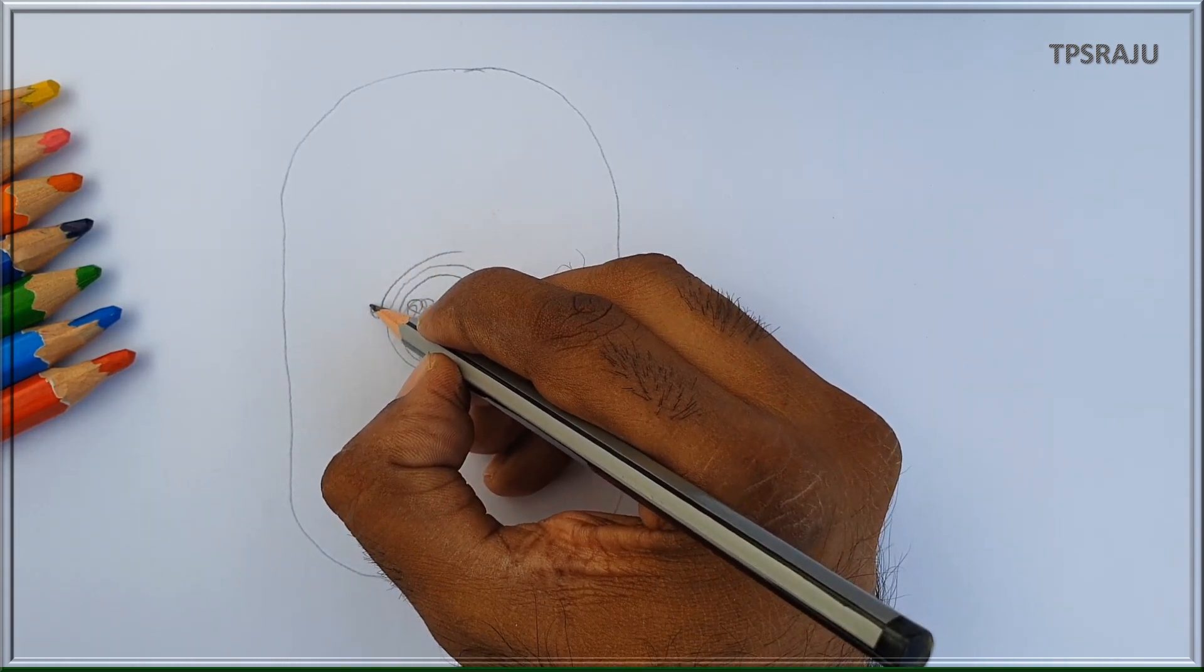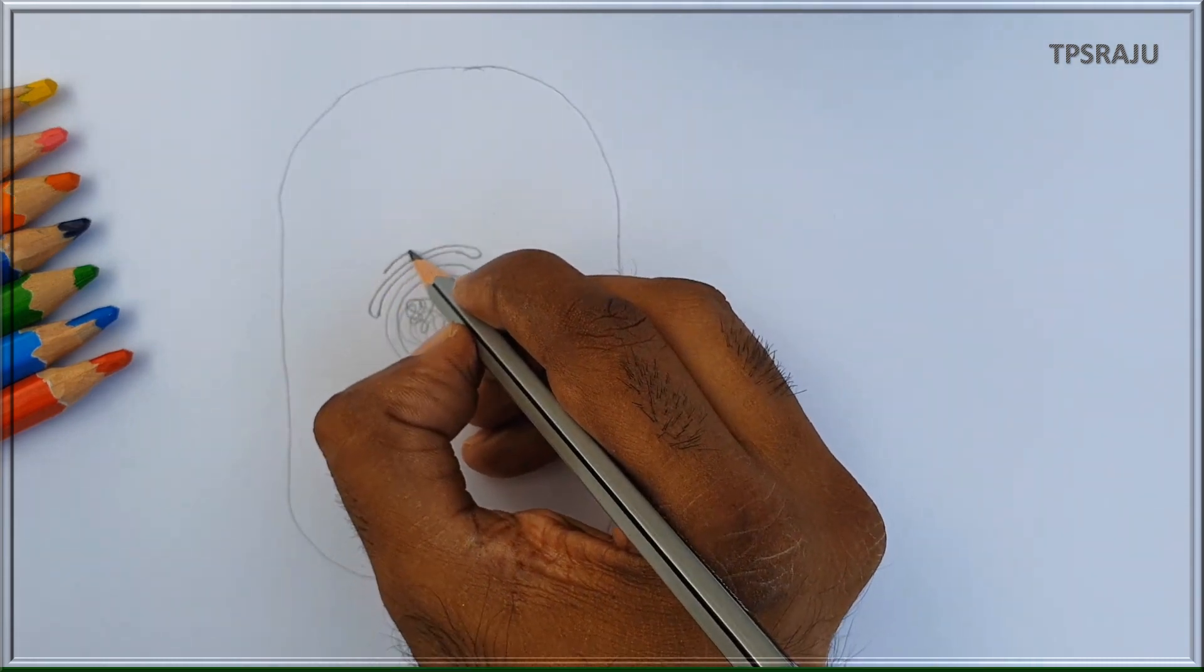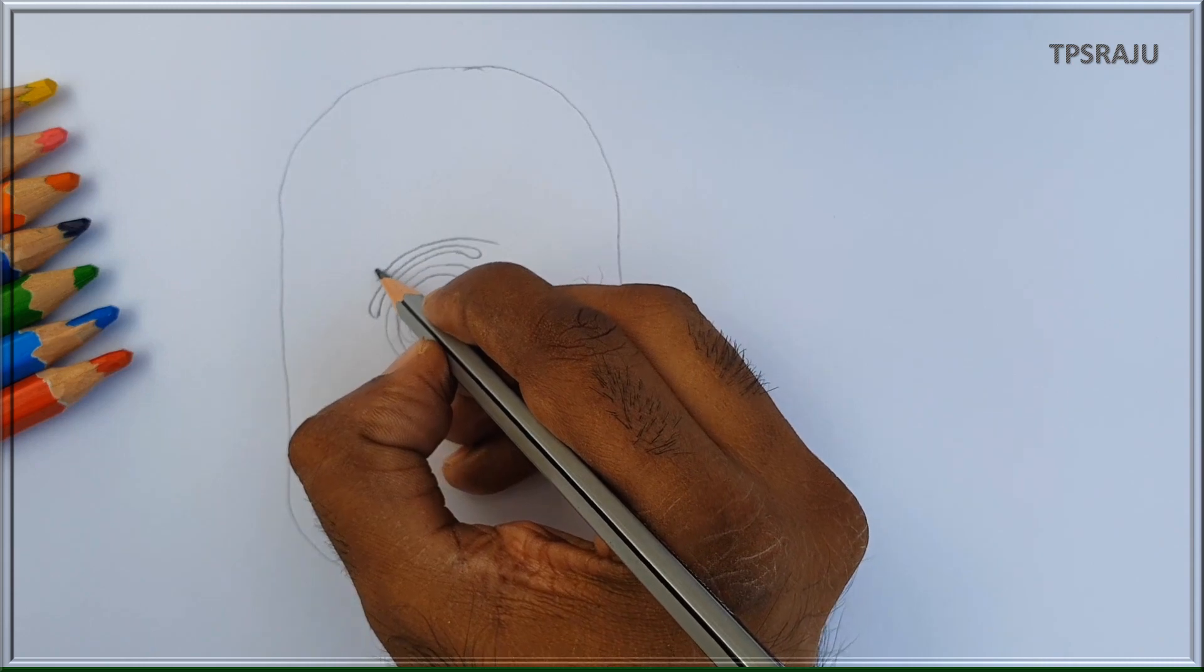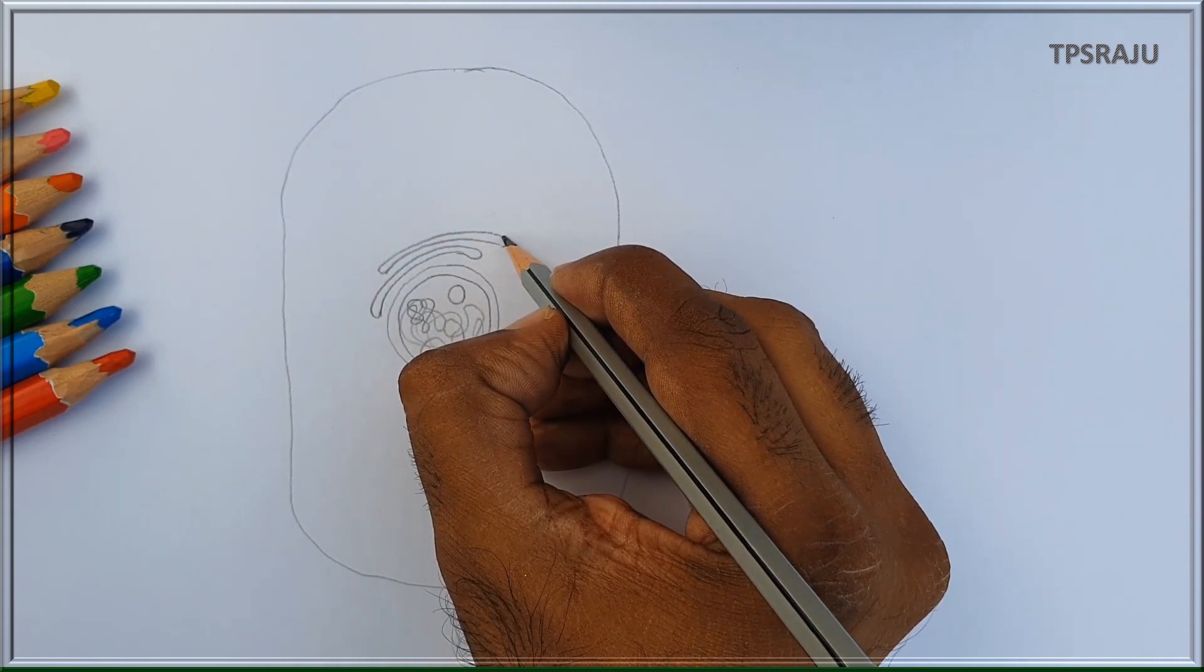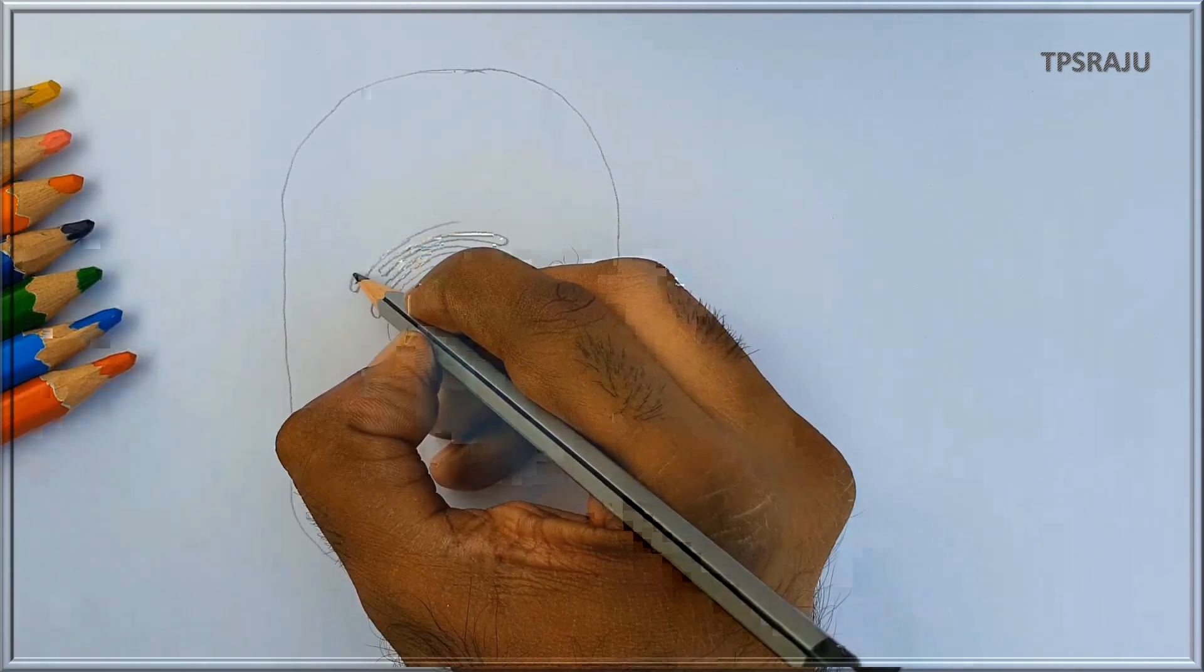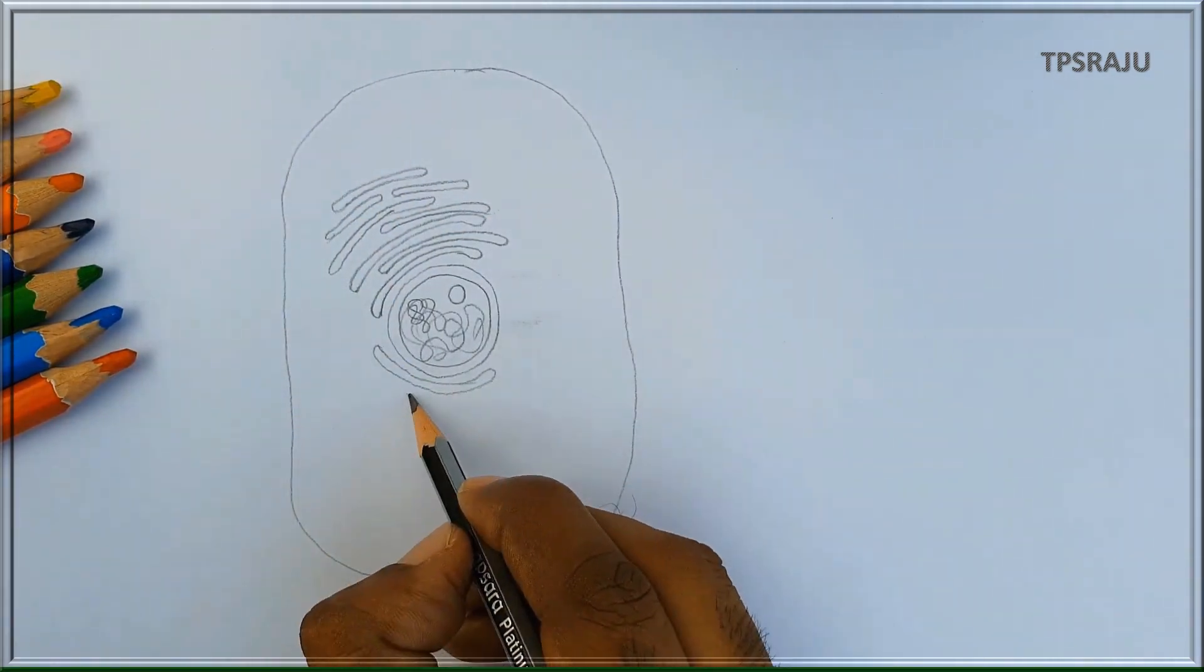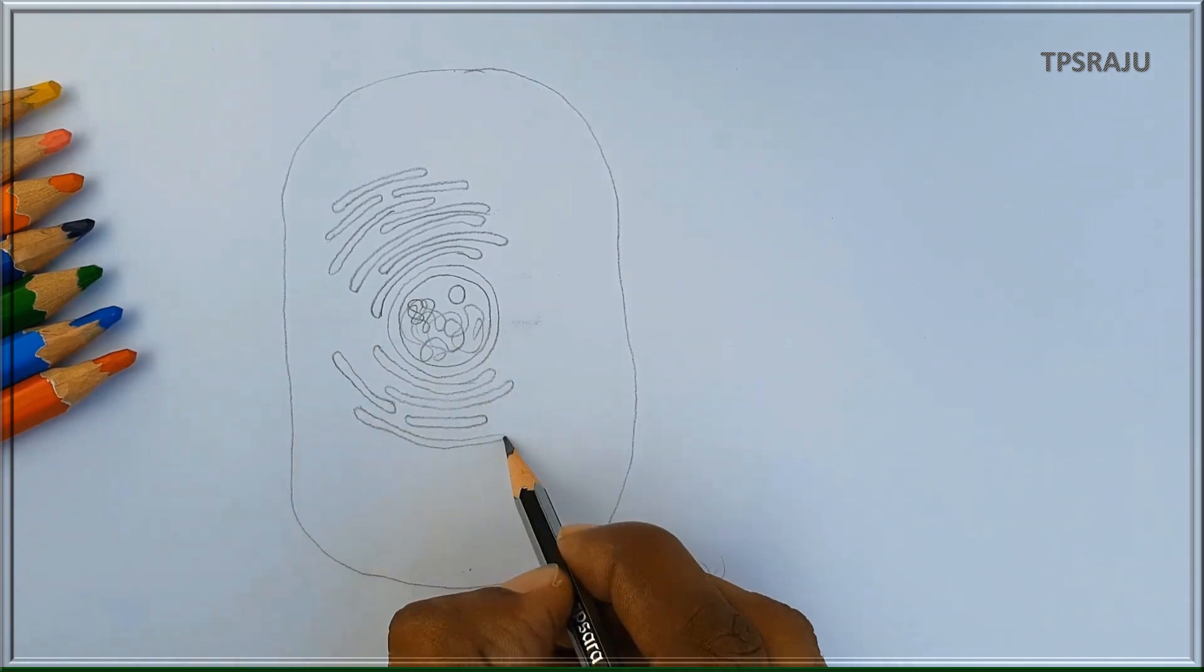There is a network of tube like membranes spread throughout the cell called endoplasmic reticulum. This is endoplasmic reticulum.